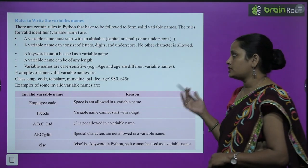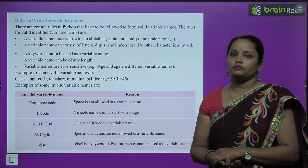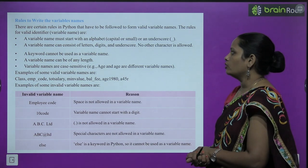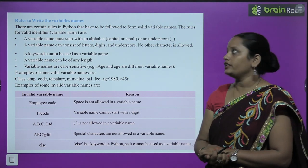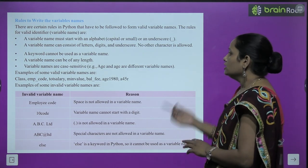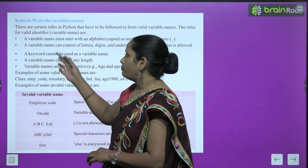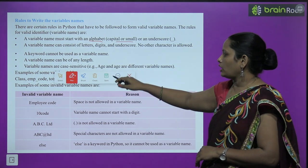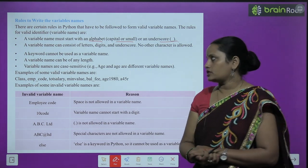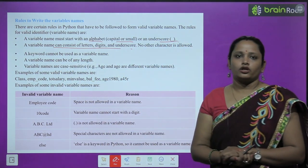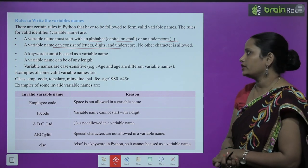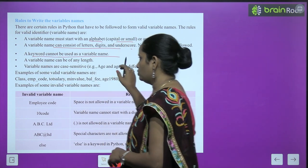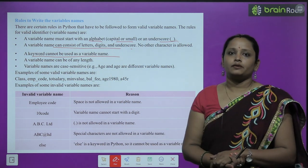Now let's learn the rules to write variable names. There are certain rules in Python to form a valid variable name: a variable name must start with an alphabet (capital or small) or an underscore. A variable name can consist of letters, digits, or underscores — no other character is allowed. A keyword cannot be used as a variable name.